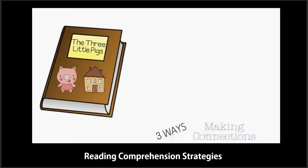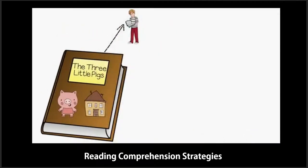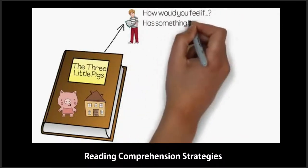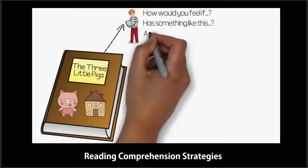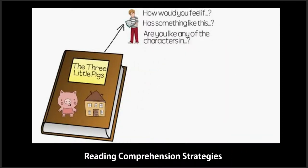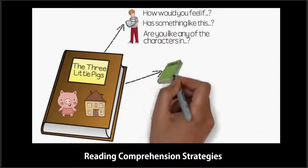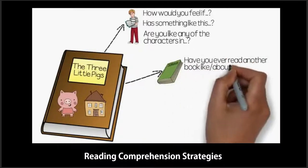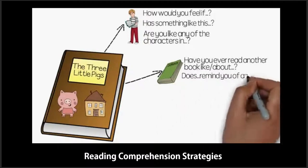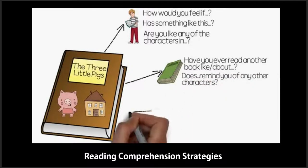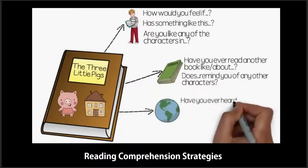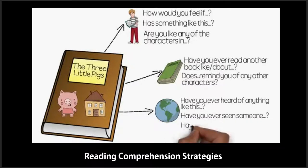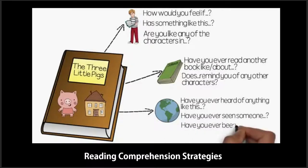Readers can make connections in three different ways. Text to self: How would you feel if the wolf was trying to get in your house? Has something like this ever happened in your life? Are you like any of the characters in The Three Little Pigs? Text to text: Have you ever read another book about pigs? Does the wolf remind you of any other characters from a different story? Text to world: Have you ever heard of anything like this happening in real life? Have you ever been to a house made of straw, wood, or bricks?